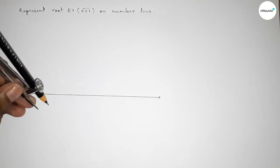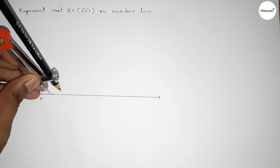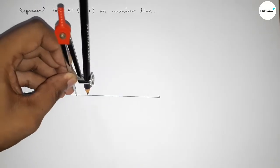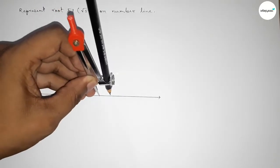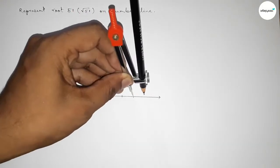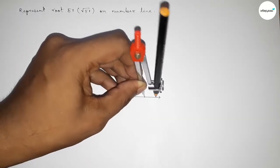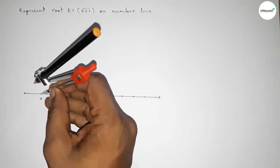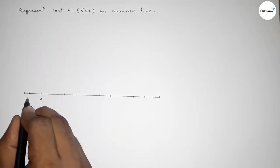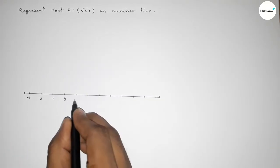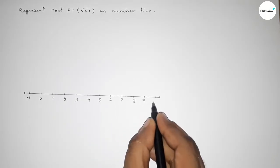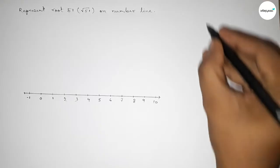By using a compass to mark the numbers on the line, the length between each mark is called one unit length. Taking here one unit length by compass and marking the numbers on the line: minus 1, 1, 2, 3, 4, 5, 6, 7, 8, 9, 10.